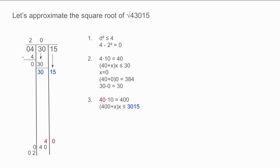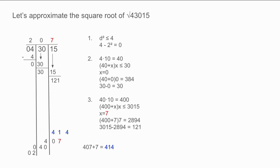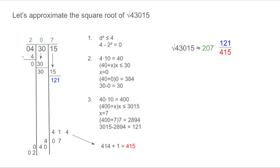Bring down the 15. Now we will find the third part of our integer. First, multiply the 40 by 10. Then find the largest x so that 400 plus x times x is less than or equal to 3015. The number we are looking for is 7. Thus, 400 plus 7 times 7 is equal to 2894. Write 7 above the columns. Subtract 3015 minus 2894 which is equal to 121, and write 121 in the right hand column. Bring the 7 down to the bottom beside the 40. Add 407 plus 7 which is equal to 414, and write 414 in the bottom of the column shifted one spot over. Now add 1 to 414 obtaining 415. Our answer to the approximate square root of 43,015 is approximately 207 and 121 over 415.